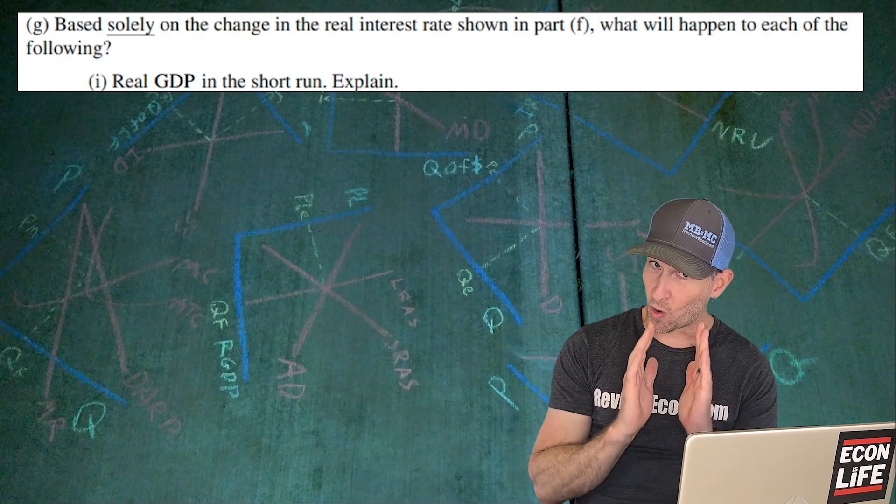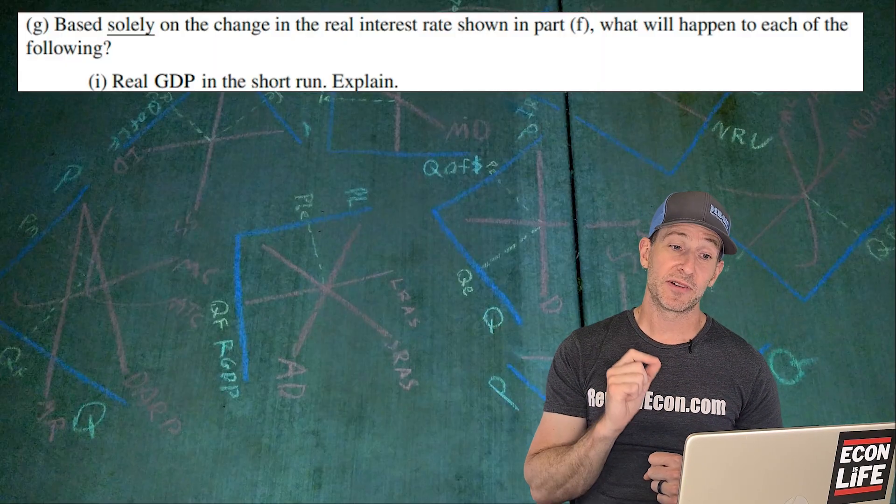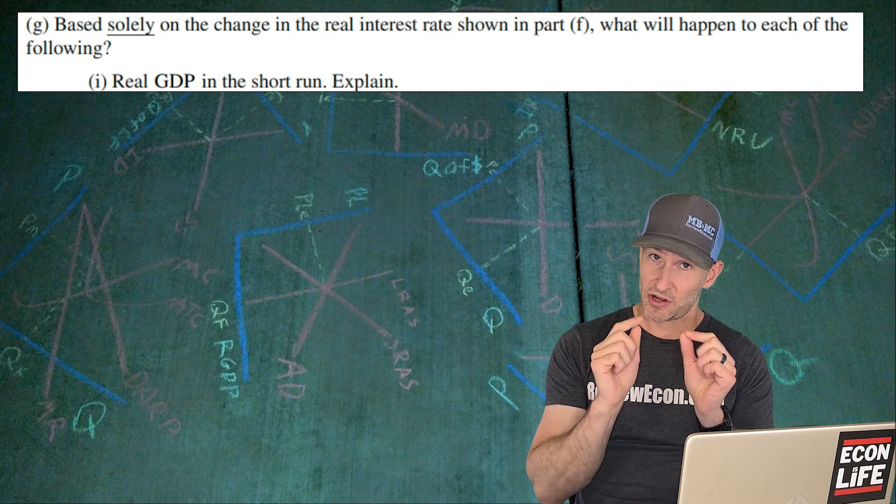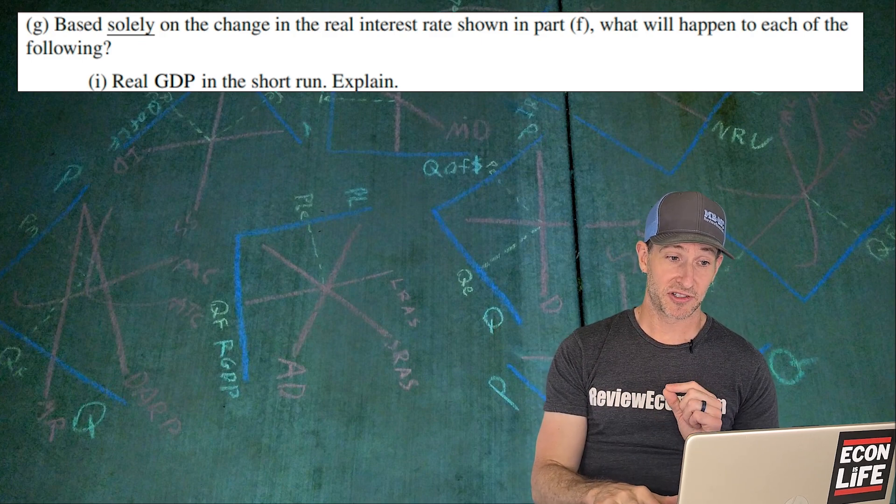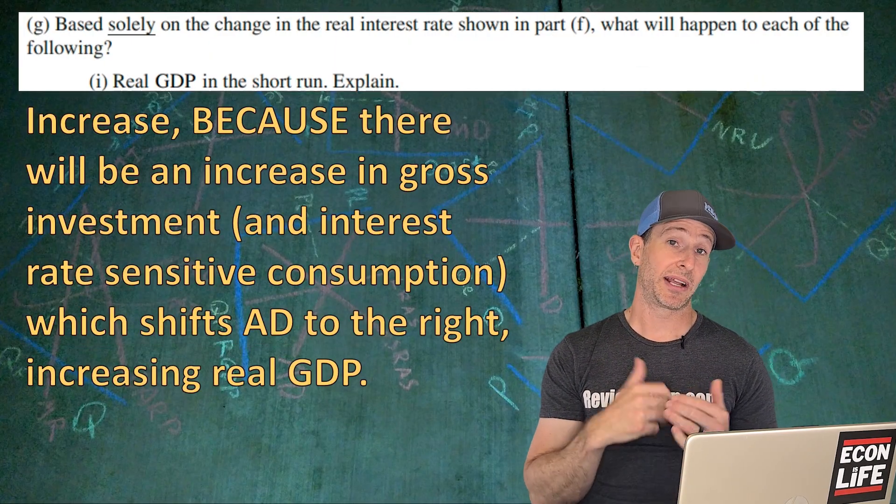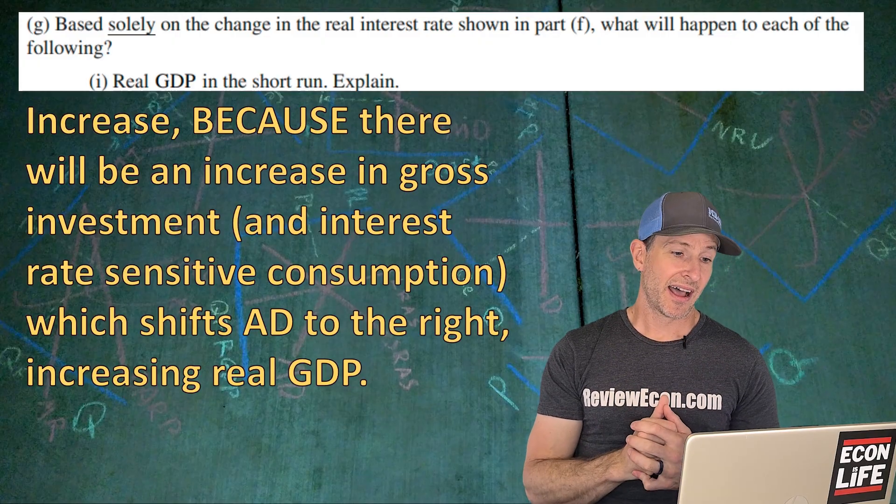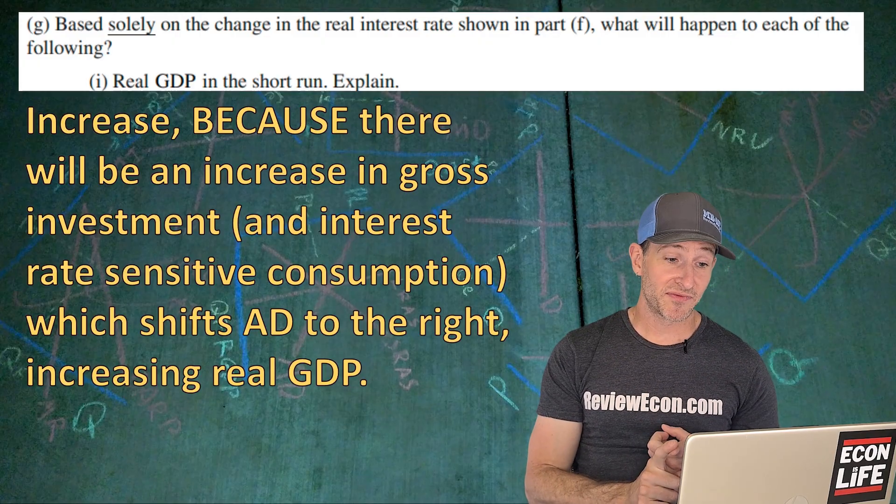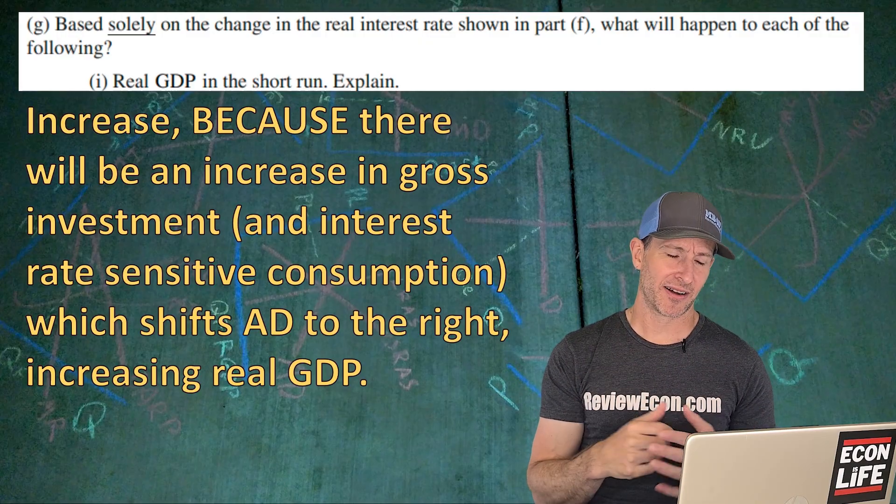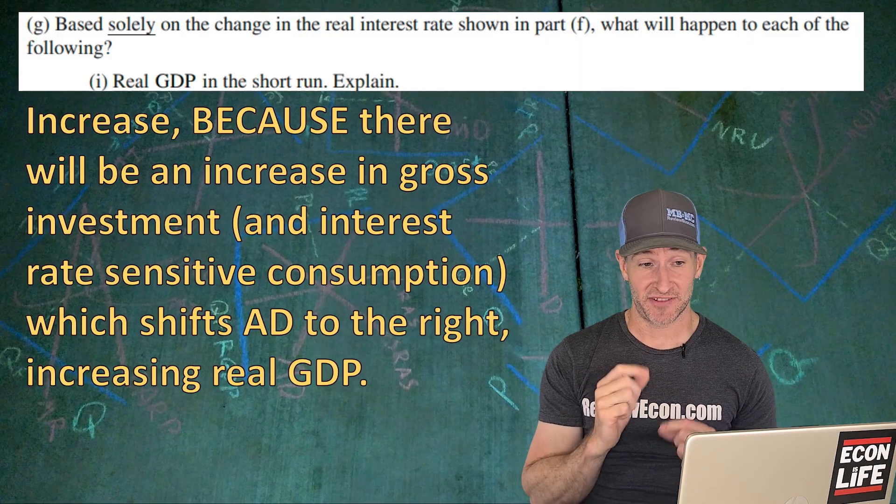Next, based solely, that means we're only looking at the change, don't get other variables involved here, only the real interest rate we saw in part F, what will happen to real GDP? So only focus on that change in the real interest rate. Remember our interest rate just fell. A decrease in the interest rate is going to increase real GDP in the short run. And that's because there will be an increase in gross investment and interest rate sensitive consumption. You might want to add that real GDP is going to increase because of the AD shift.